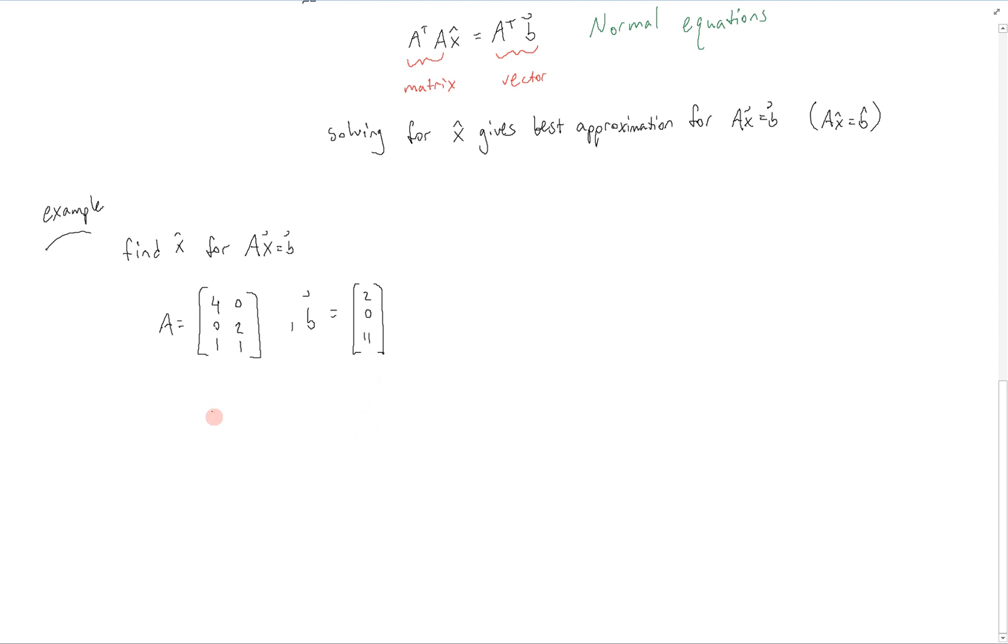We can first try to solve this directly, as we normally would. So we say ax equals b. We put this into our usual augmented form and row reduce it. And we can see here that this last row makes this system inconsistent. Since we have 0x1 plus 0x2 is equal to 42. This is inconsistent.